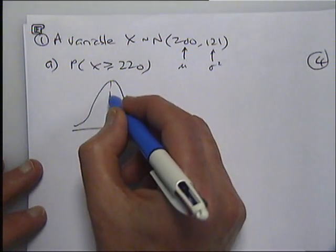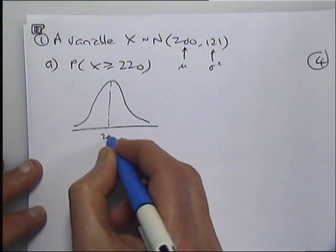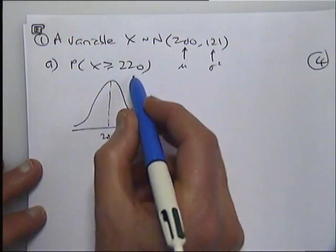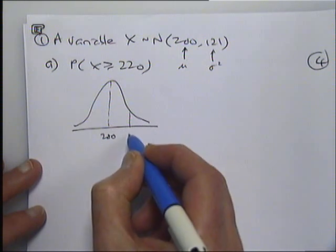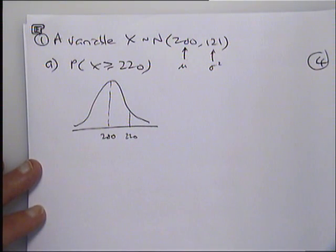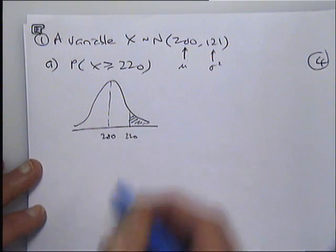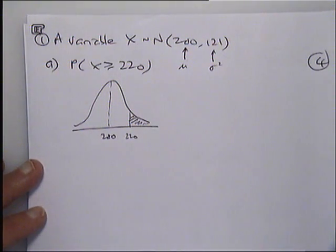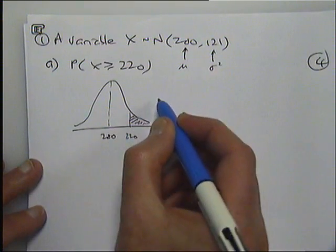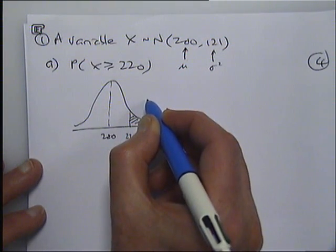So I've got a mean of 200, my question is talking about a value of 220 which will be somewhere over here on the right, and I want the probability X is greater than that, so I'm looking for this area over here.